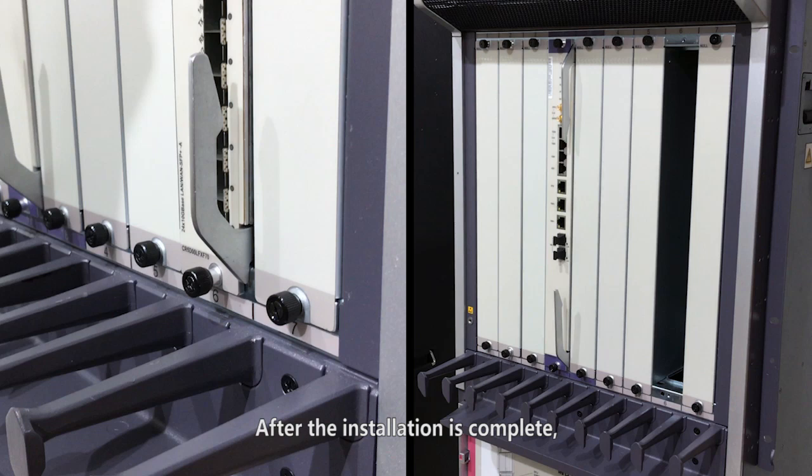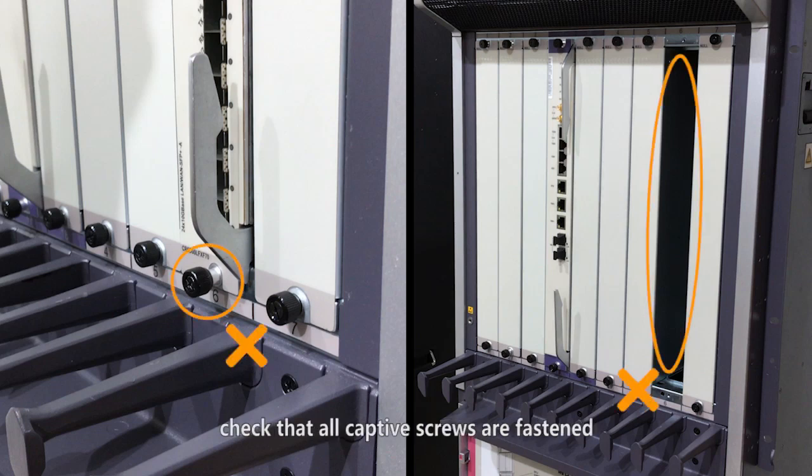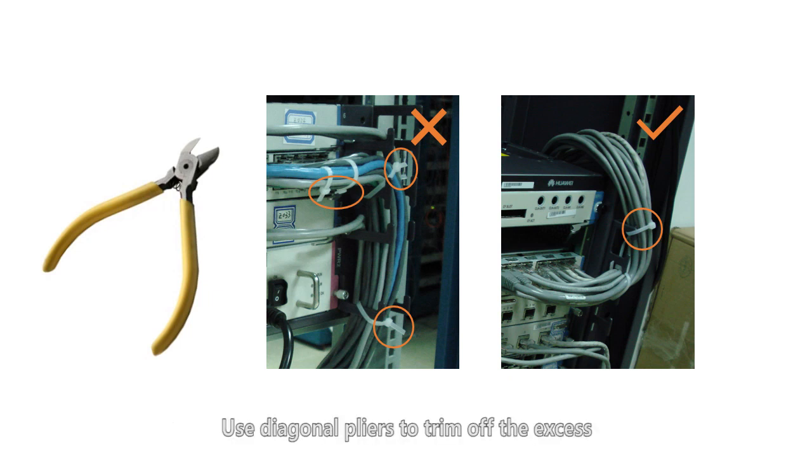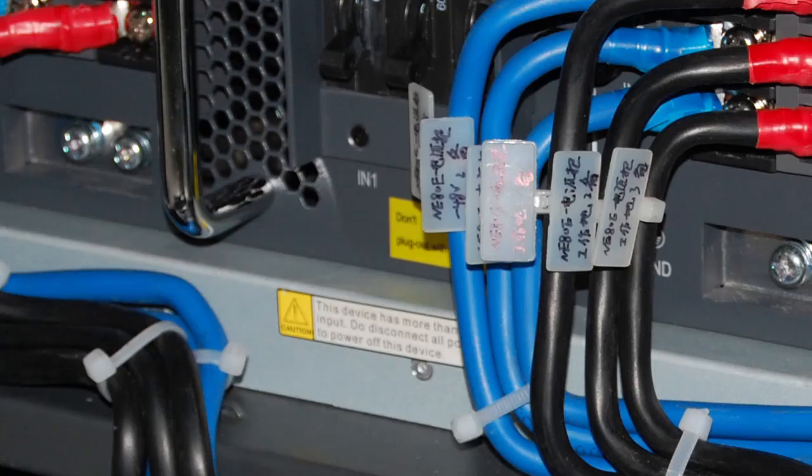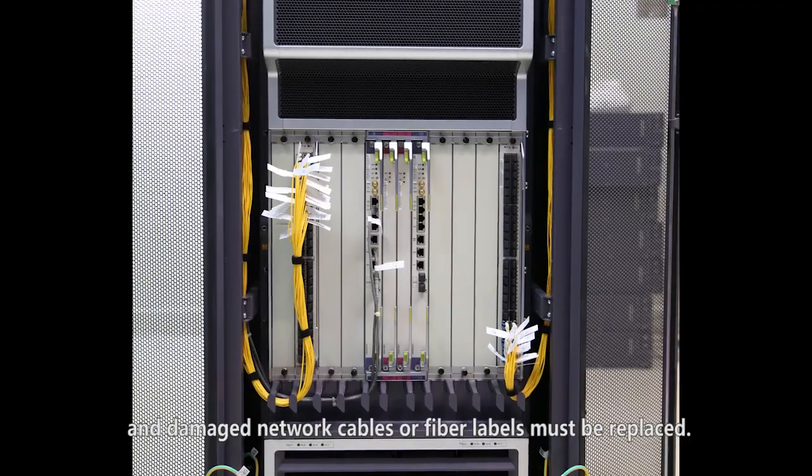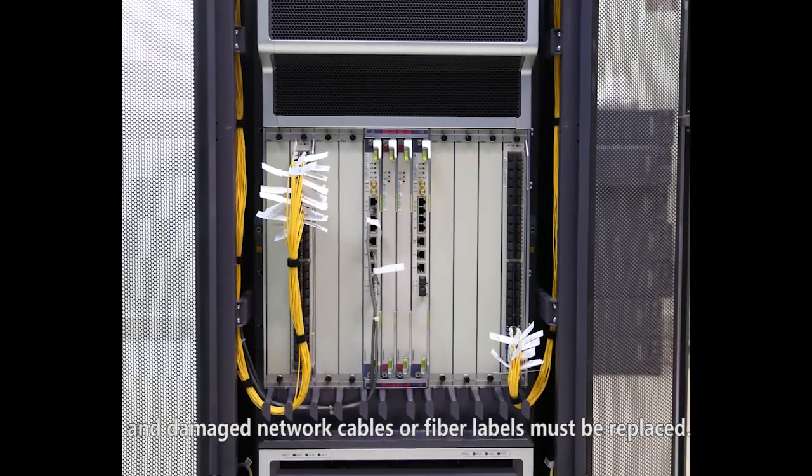After the installation is complete, check that all captive screws are fastened and all the idle slots have filler panels inserted. Check that cables are properly bundled and labels are properly attached. Use diagonal pliers to trim off the excess of cable ties without remaining rough edges. Plastic formal labels must be attached to power cables and damaged network cables or fiber labels must be replaced.